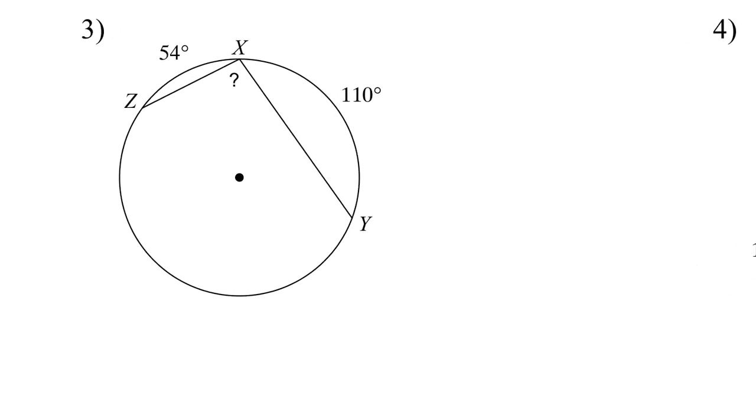Here, I need to start finding this information. We know that the entire circle around is 360 degrees. So I'm going to start by subtracting 360 minus 110 minus 54.